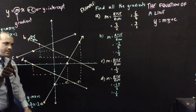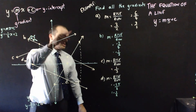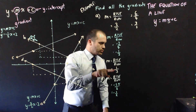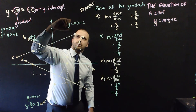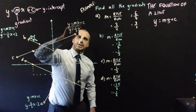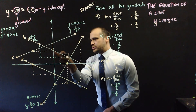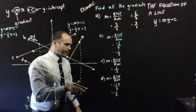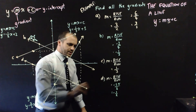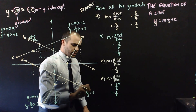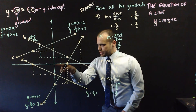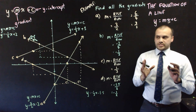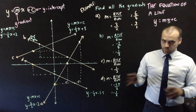For line C: y equals mx plus c, gradient was one-third, so y equals one-third x, and looking at the y-intercept — 1, 2, 3 — it's plus 3, giving y equals one-third x plus 3. And for D: the gradient is negative one-half, so y equals negative one-half x, and the y-intercept is negative 1.5, giving y equals negative one-half x minus 1.5. That covers gradients and y-intercepts.